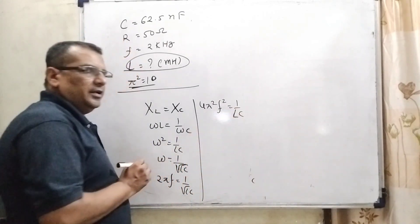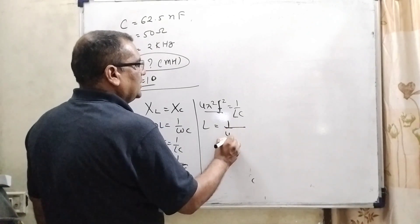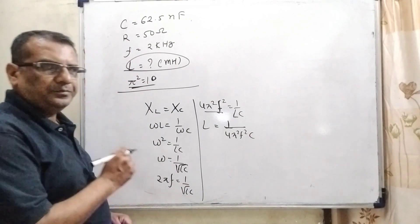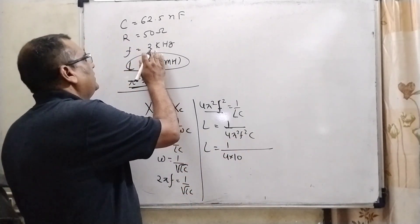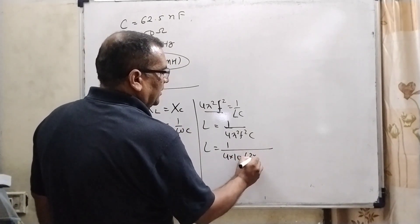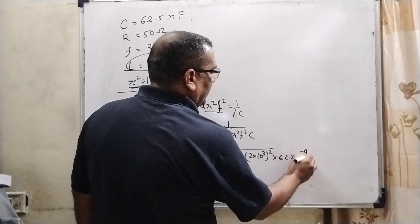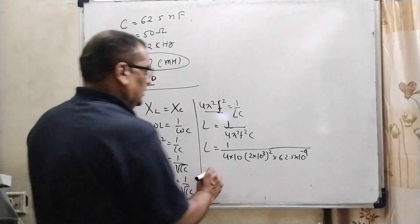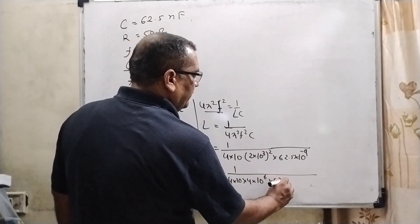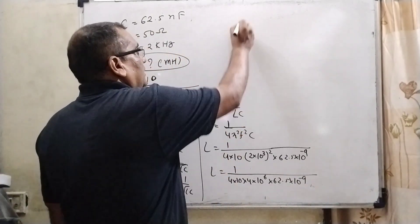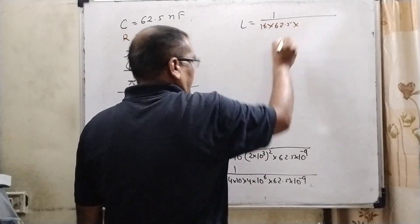Transposing L to the left side and all other terms to the right side in the denominator: L equals 1 upon (4 pi-square × f-square × C). Now substituting values: pi-square is 10, f is 2 kilohertz = 2 × 10³ Hz so f-square = 4 × 10⁶, and C is 62.5 nanofarad = 62.5 × 10 to the power minus 9. So L equals 1 upon (4 × 10 × 4 × 10⁶ × 62.5 × 10⁻⁹).